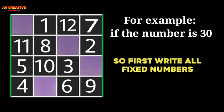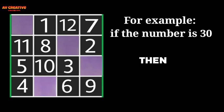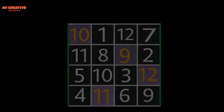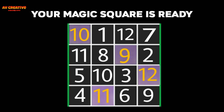For example, if the number is 30, first write all the fixed numbers, then by the following method: A equals X minus 20, as X equals 30, equals 30 minus 20 equals 10. B equals A plus 1 equals 10 plus 1 equals 11. C equals B plus 1 equals 11 plus 1 equals 12. D equals A minus 1 equals 10 minus 1 equals 9. Here it is, your magic square is ready.